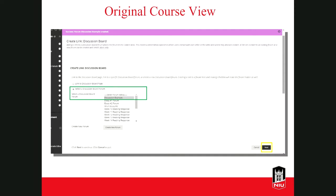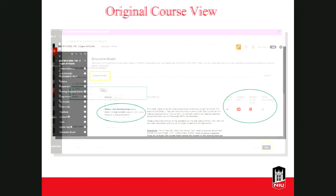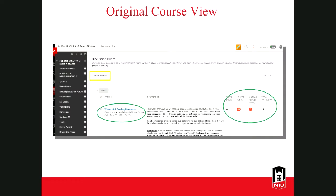After you've submitted the discussion forum, you'll be redirected to the screen you were on before you created the new thread. It should automatically select the discussion board forum you just created, and you'll just want to click Next to continue. If you created the forum from the discussion board list, you'll be returned to that tool page, and you should now see your discussion listed there.